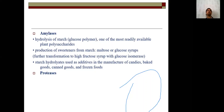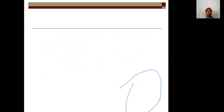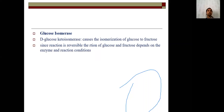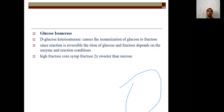Amylase, protease, and lipase are tremendously used in industrial applications. Protease is used in the detergent industry. Glucose isomerase (D-glucose keto-isomerase) causes the isomerization of glucose to fructose. The equilibrium between glucose and fructose depends on the enzyme and reaction conditions. High fructose corn syrup is made using these enzymes.